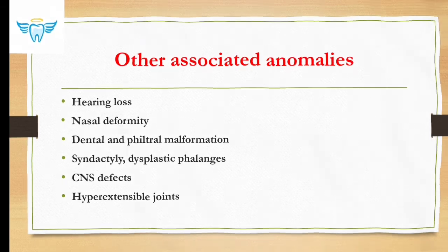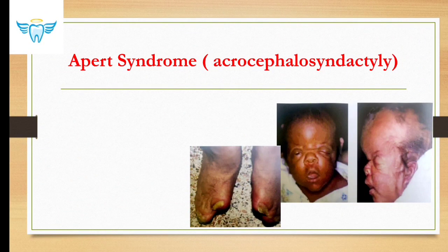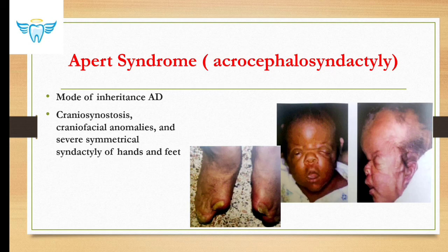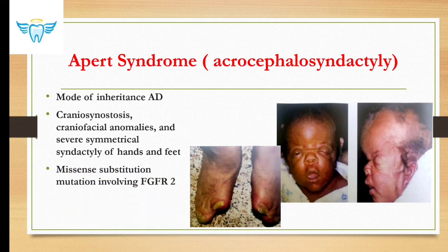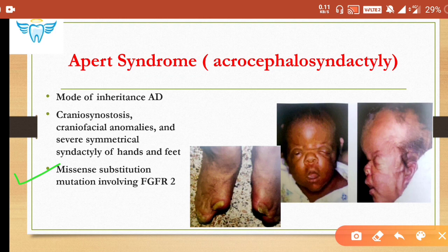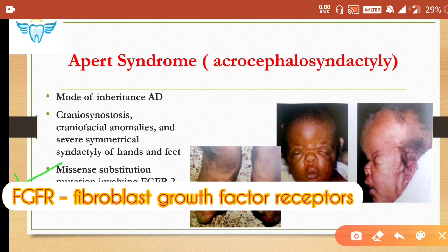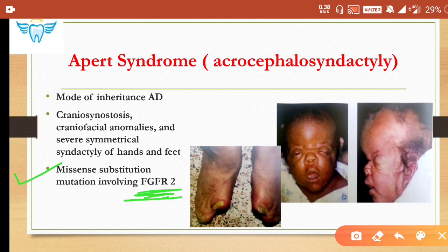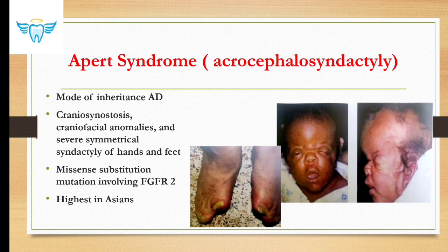Apert syndrome, also known as acrocephalosyndactyly, has autosomal dominant inheritance. There is craniosynostosis along with craniofacial anomalies, and severe symmetrical syndactyly of hands and feet. A missing substitution mutation involving FGFR2 (fibroblast growth factor receptor 2) is responsible. This syndrome is more commonly seen in Asians.